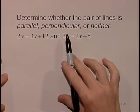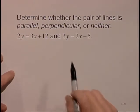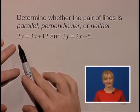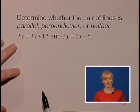Let's determine whether the pair of lines is parallel, perpendicular, or neither. We'd like to get each of our equations into the slope-intercept form by isolating y on one side of the equation.